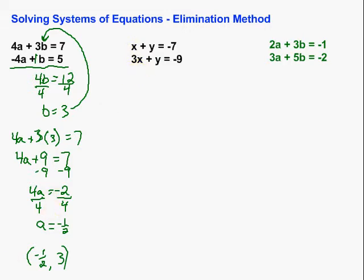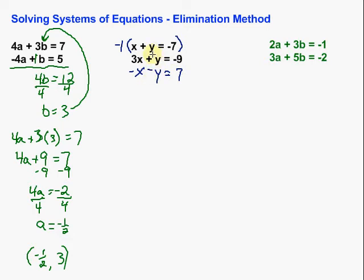Now let's look at this next one. In this case, we have y's, which are similar, but they're not opposites — they're both plus y. So in order to have them cancel out when we add the two equations together, we need to make them into opposites. We can do so by multiplying one of the equations through by something that will make that 1y an opposite — that would be negative 1. So let's multiply this top one through by negative 1 and rewrite it down below.